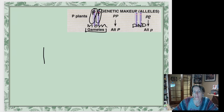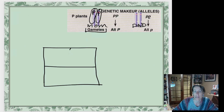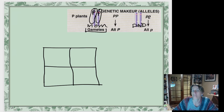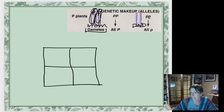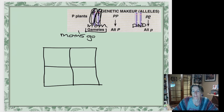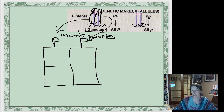Now I'm going to create a Punnett square, which helps you predict what happens when you cross two organisms. In a Punnett square, you always put the mom's gametes along the top. When this purple-flowered mom makes her eggs, 50% will have the chromosome with big P and 50% will have the other chromosome — also big P. So mom's gametes are all big P; it's not very exciting.